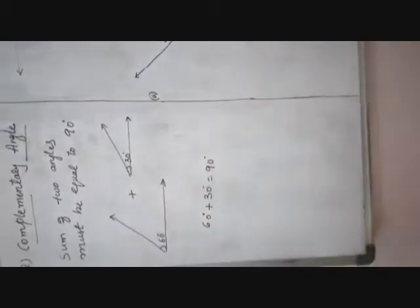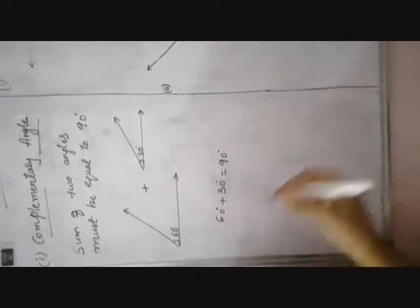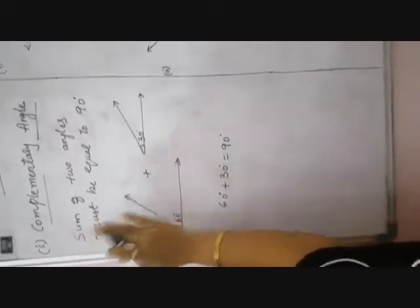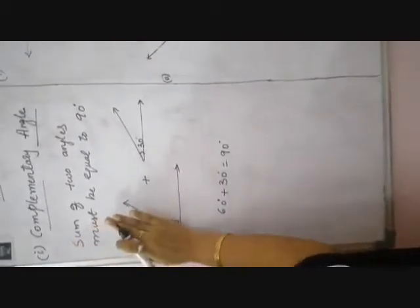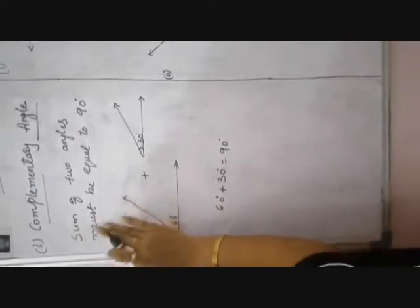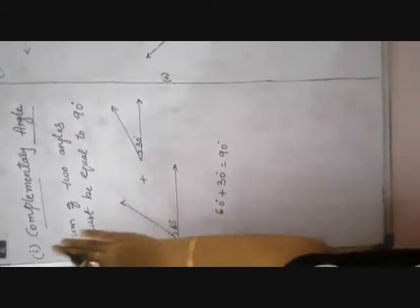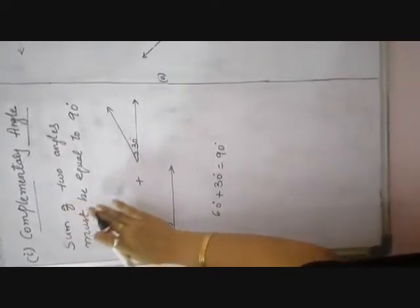Supplementary angle I will explain afterwards. Supplementary angle means the sum of two angles must be equal to 180 degrees. For the next exercise I will explain that. Today, we are going to do Exercise 2 based on complementary angles only. So today, remember only complementary angles — the sum of two angles must be equal to 90 degrees.